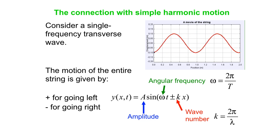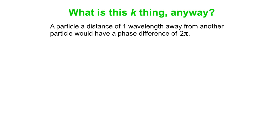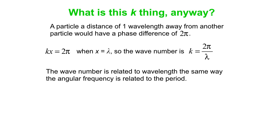So what exactly is this k thing anyway? A particle at a distance of one wavelength away from another particle would have a phase difference of 2π. It would oscillate together, but one is like a full cycle behind. In other words, kx is 2π when x is λ, so the wave number is simply k = 2π/λ. Note that the wave number is related to wavelength the same way the angular frequency is related to the period.